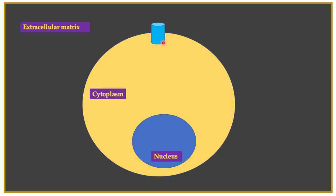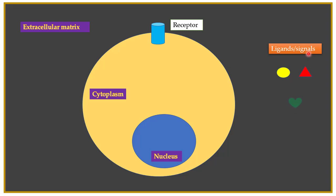On the surface of all cells, a lot of receptors are present. These receptors are actually proteins present on the surface of the cell. In the extracellular matrix, you have a lot of ligands — you can also call them signals. These are the different types of ligands or signals that you are going to see in the extracellular matrix. So on the surface of the cell you see receptors, and in the extracellular matrix you see a lot of signals.